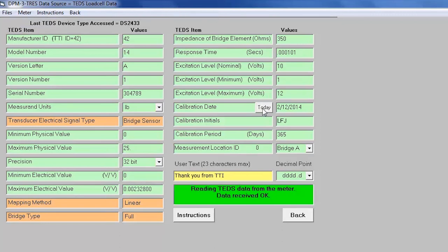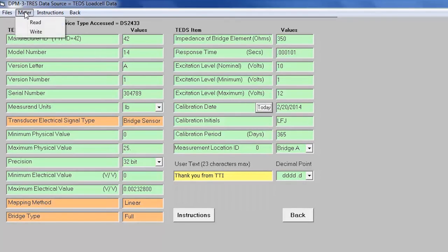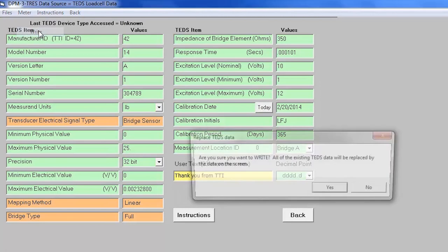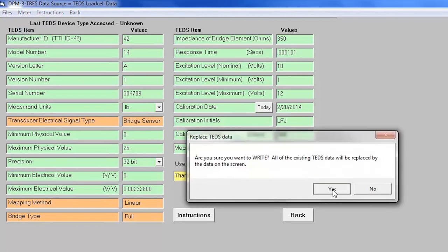Now we'll click on today to change the calibration date. From the control bar, click meter, then click on write to write the new template parameters to the EEPROM.